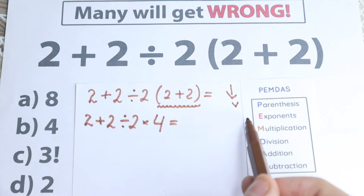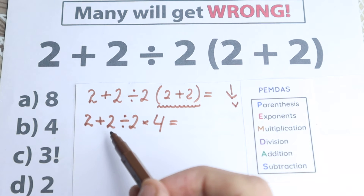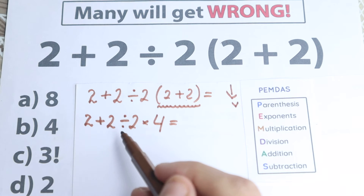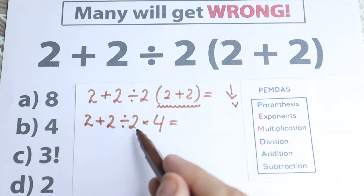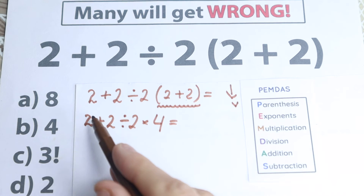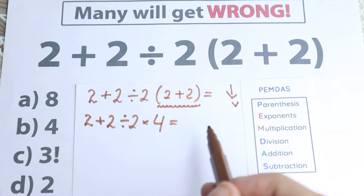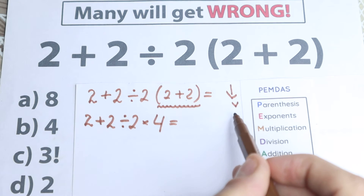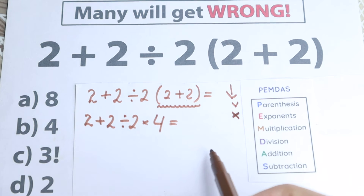The next step according to PEMDAS is exponents. We need to scan where we have exponents. I don't see any squares, cubes, or higher powers. We have only regular numbers to the first power, so we can easily skip this step — there are no exponents here. Let's go to the next step.